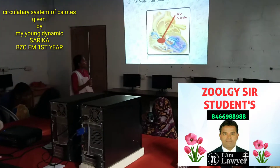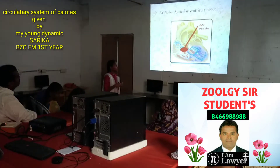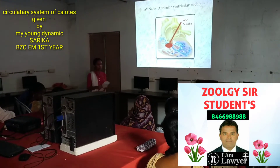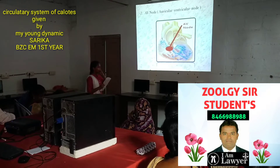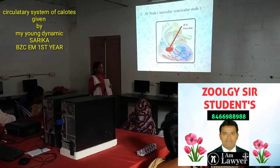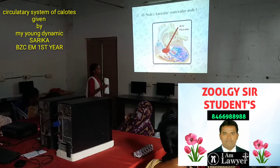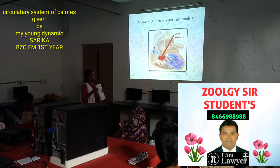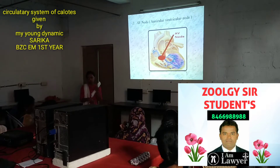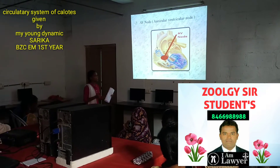The auricular ventricular node is present at the beginning of the intra-auricular ventricular pathway and it processes the impulses into all the chambers. Finally the blood enters into the systemic arches and pulmonary arches.